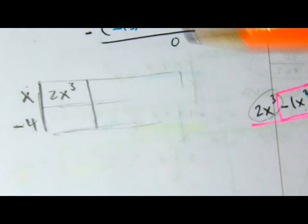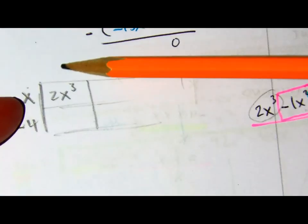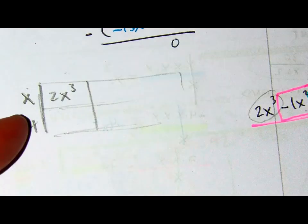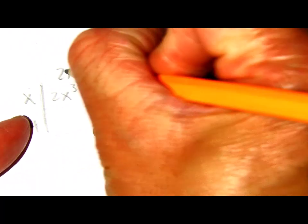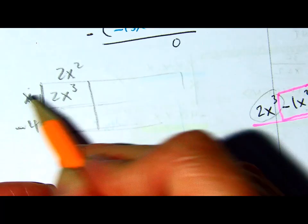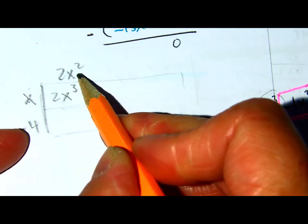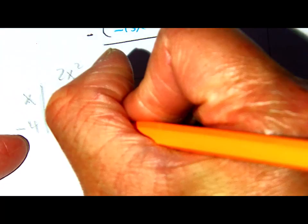So, now it's like a multiplication table. I have to figure out what goes here to multiply. The answer is 2x squared. 2x squared times x is 2x cubed. I can multiply these two, so that'll be negative 8x squared.